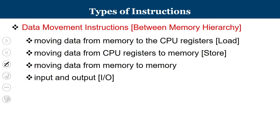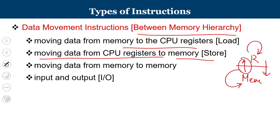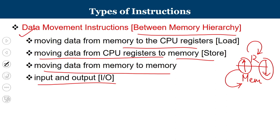Data movement instructions involve moving data between the memory hierarchy. Inside the processor you have registers, and then you have memory. Movement can be between registers, between two memory locations in some microprocessors, or from memory to register and register to memory. Moving data from memory to CPU registers is typically known as load operations; moving data from CPU registers to memory is known as store operations. The last category includes moving data from input/output devices to registers inside the processor.